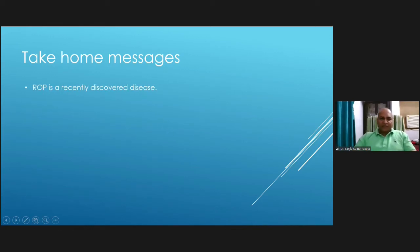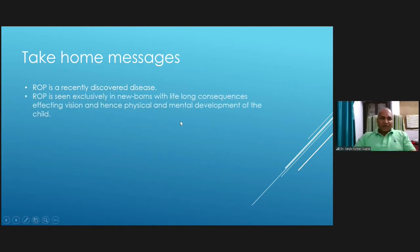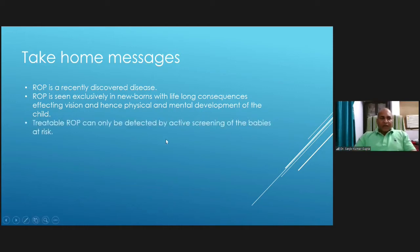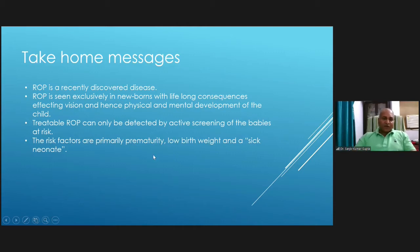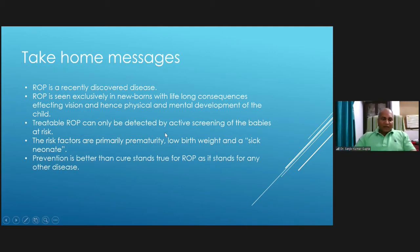In summary, ROP is a recently discovered disease seen exclusively in newborns, with lifelong consequences affecting vision and hence physical and mental development. Treatable ROP can only be detected by active screening of at-risk babies, because once a particular window period has passed the disease becomes untreatable or the prognosis becomes very poor. Risk factors are primarily prematurity, low birth weight, and a sick neonate. Prevention is better than cure — screening is the only way to reduce the blindness burden caused by this disease.